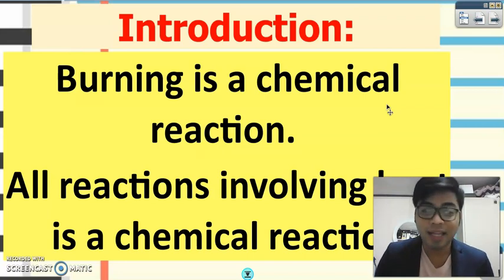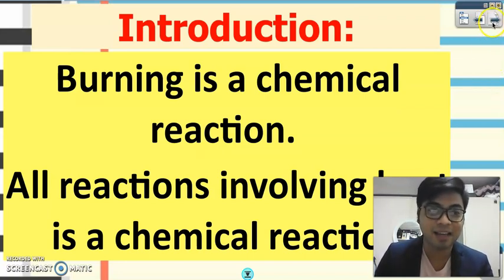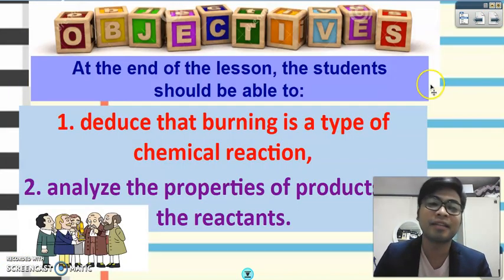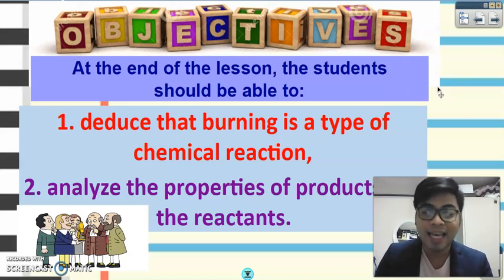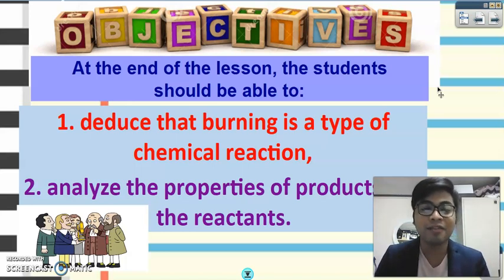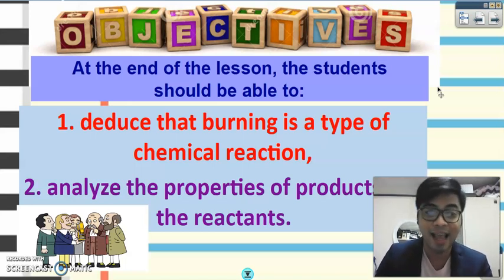Our objectives for today are to deduce that burning is a type of chemical reaction, and to analyze the properties of the products and reactants that give us the idea that all products of burning are new products — therefore burning is a chemical reaction.